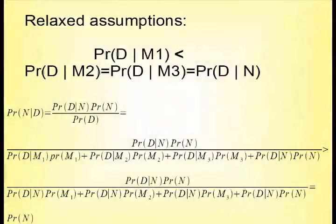So the assumption is now that the probability for the data given M1 is less than the probability for the data given M2, M3, or N, while the probability for the data is the same for M2, M3, and N. As you can see from this algebraic exercise, the result still stands.